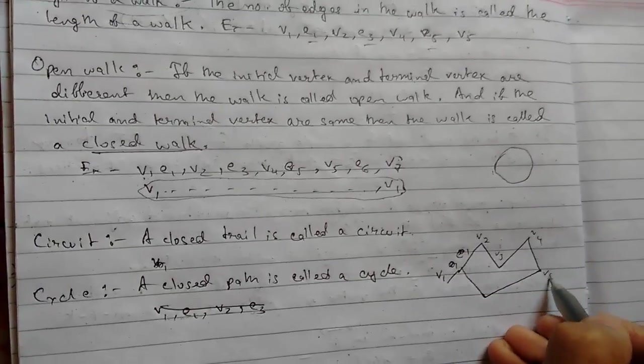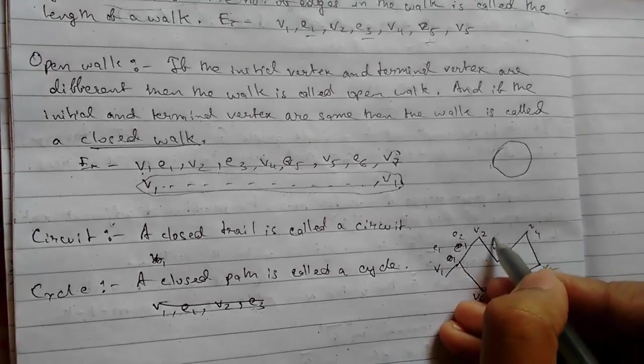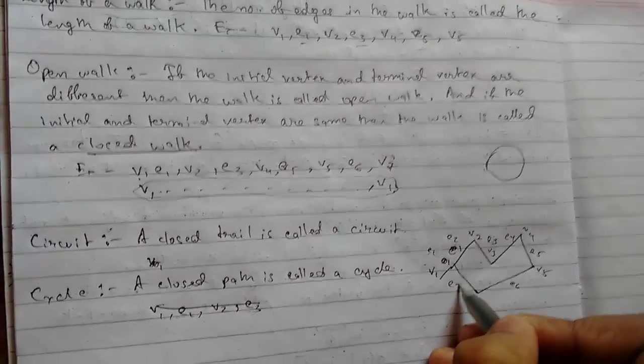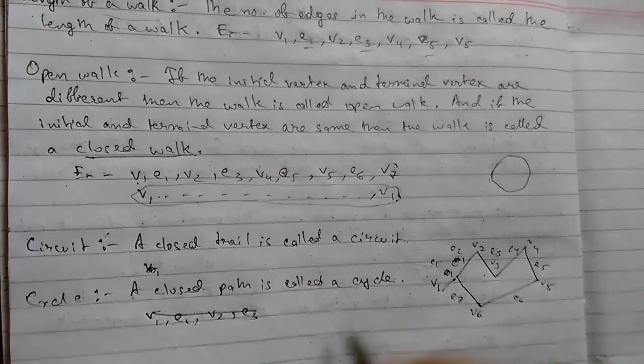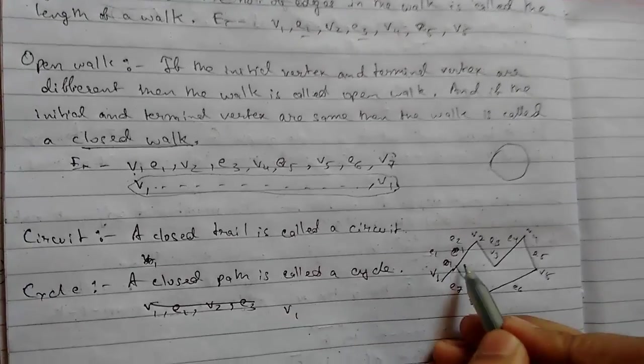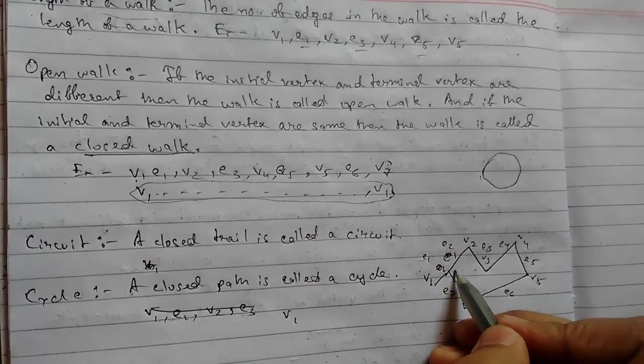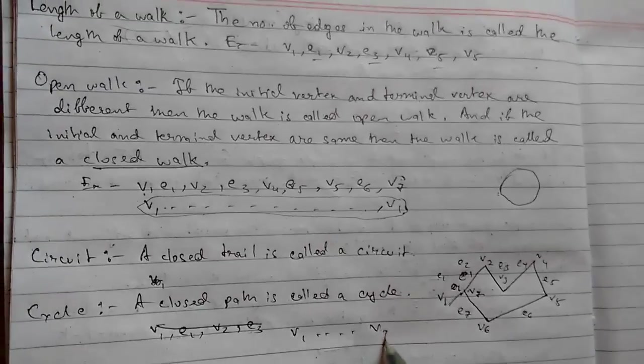So e1, e2, e3, e4, e5. Suppose now for a cycle it will start from v1, it will go on like this and it will end on this. Suppose this is v7, so this will be a cycle.